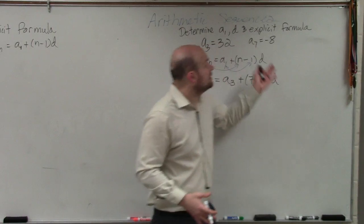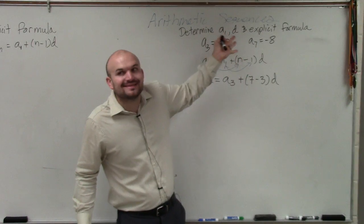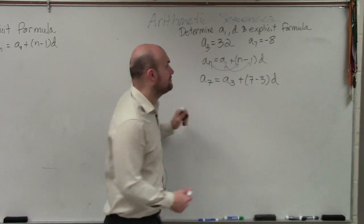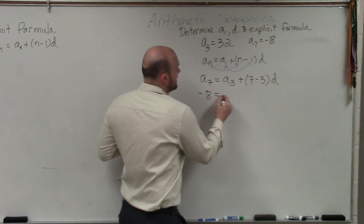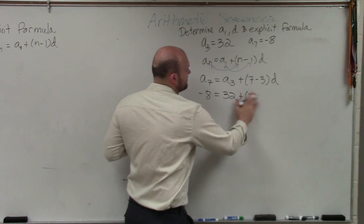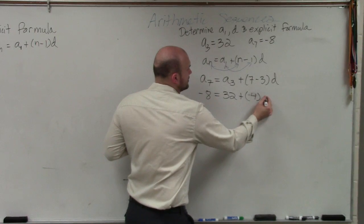Again, I don't know the difference, but what are we trying to figure out? What is the common difference, right? So I know what a sub 7 and a sub 3 are. A sub 7 is negative 8. A sub 3 is 32. Plus 7 minus 3 is 4 times d.